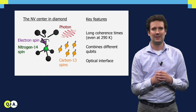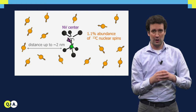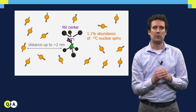The first thing to realize is that this electron spin is surrounded by an entire cloud of nuclear spins. About 1% of the diamond consists of carbon-13, which is a spin half system, and the rest consists of carbon-12, which has no spin.